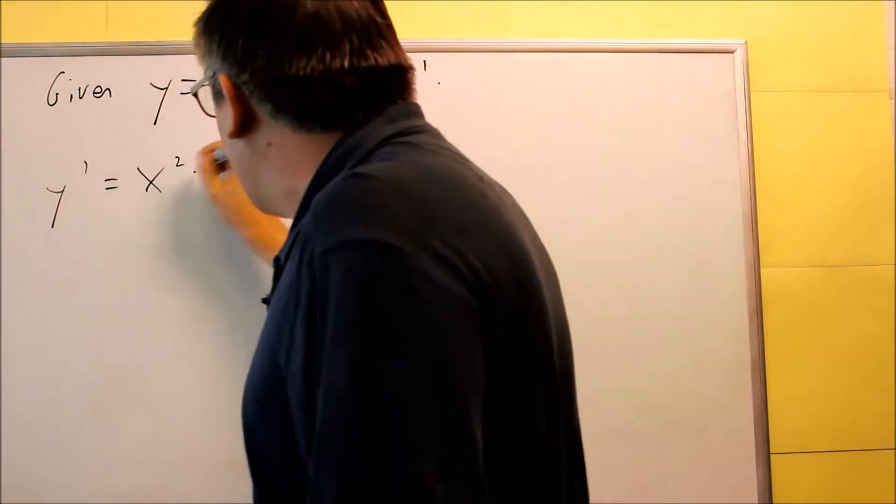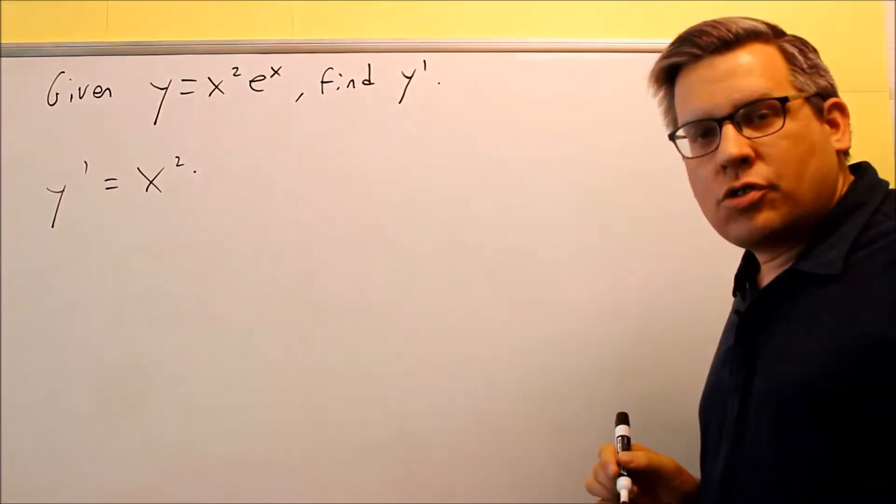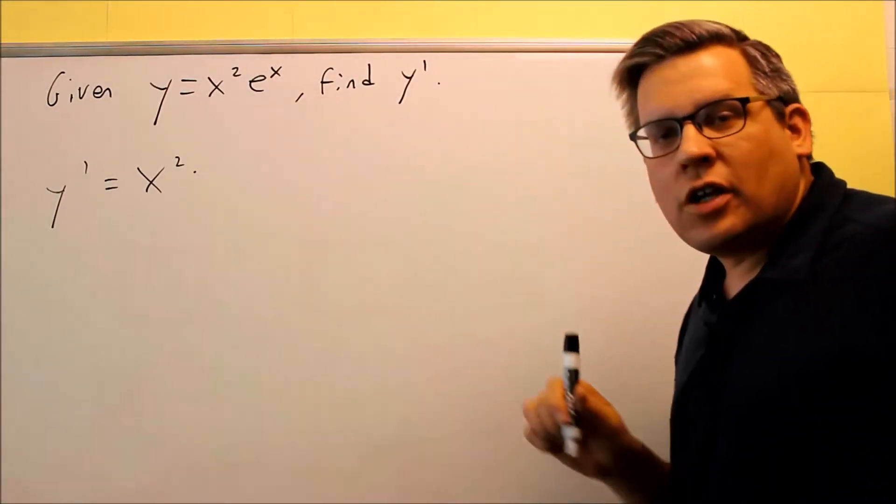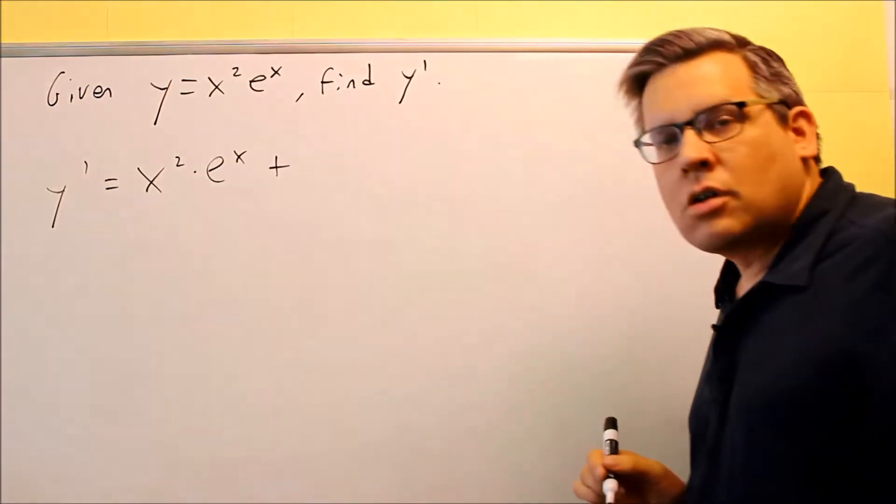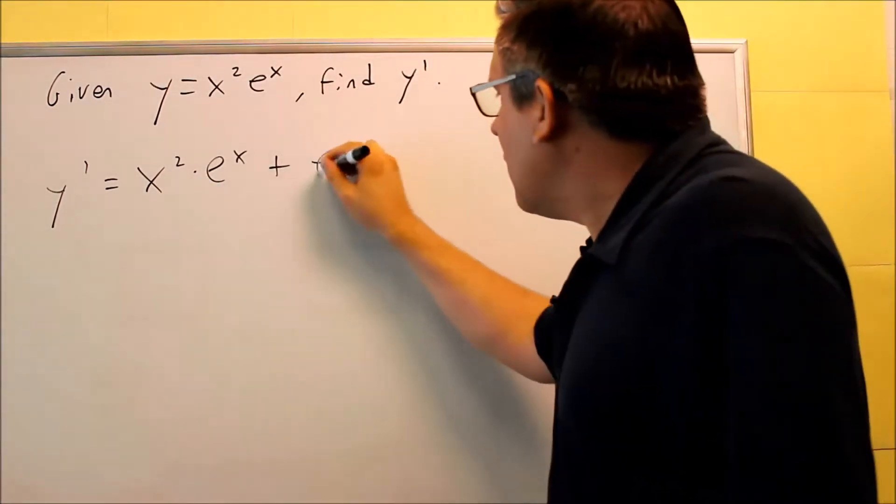Okay, so we've got the first thing, x squared, then we're going to do derivative of the second. The derivative of e to the x is e to the x plus the second thing, e to the x,